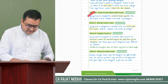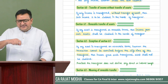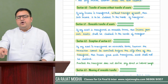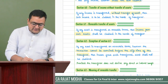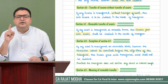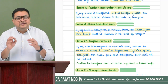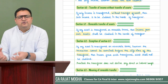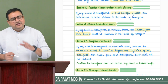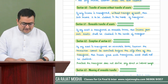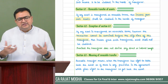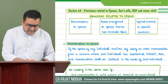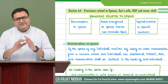Recap: Section 60 — only income is transferred without transfer of asset, clubbing applies to anyone. Section 61 — asset transferred on temporary/revocable basis, clubbing applies. Section 62 — asset transferred on revocable basis but cannot be taken back during transferee's lifetime, clubbing does not apply. Section 63 — defines 'revocable' as having the right to take back the asset; not important for examination but good to know.